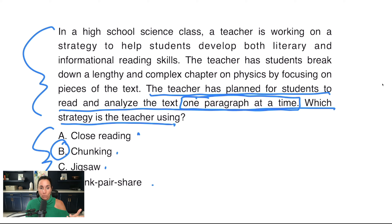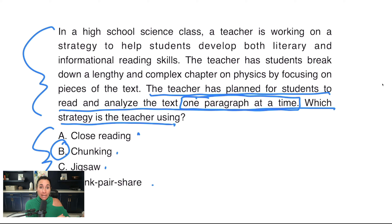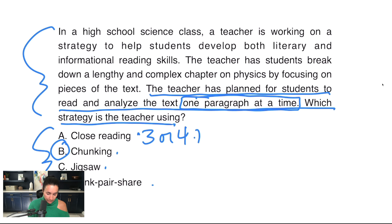Let's go through these other strategies. Close reading is when we read the text several times for different purposes. For example, I might read the text one time aloud to students, showing them proper fluency, intonation, and prosody. Then we might do a choral read together. Then I might group them in pairs or cooperative groups to reread the text, perhaps for vocabulary or comprehension. Then have them go back to their seats and read individually and further analyze the text. We read it three or four times — and that's not really what's happening in the question stem, so close reading is out.